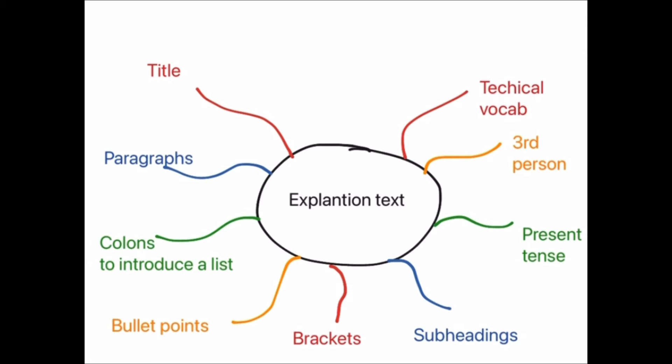Technical vocabulary is really important, especially in a science explanation text, because you need to have all the correct words to explain what you're talking about. For example, some of the words from plant life cycles are 'pollination' and 'dispersed,' and these words are going to be really important for your reader.